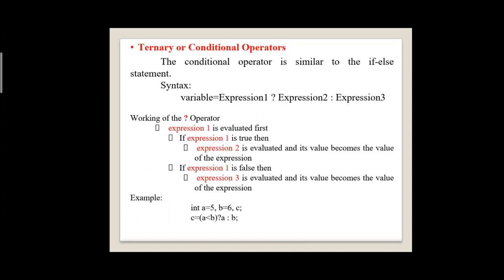Next, the ternary or conditional operator, which is similar to an if-else statement. The syntax is: variable = expression1 ? expression2 : expression3. Expression1 checks a condition; if true, expression2 (the true block) is evaluated; if false, expression3 (the false block) is evaluated. For example, three variables A, B, and C are declared. The value 5 is assigned to A and 6 to B. The condition A < B is checked; if true, the value of A is assigned to variable C.